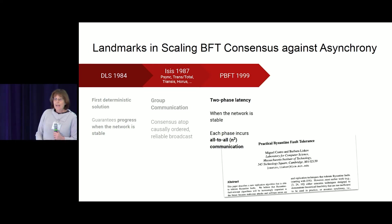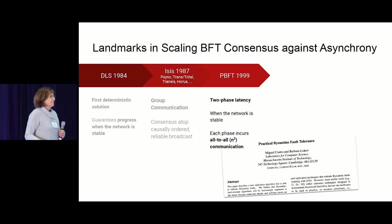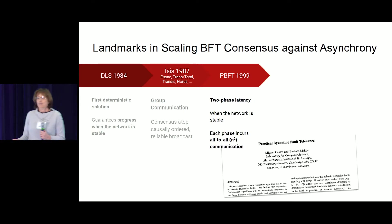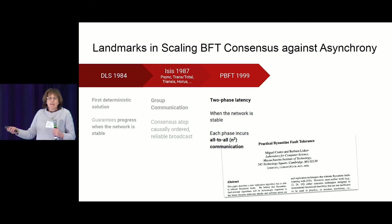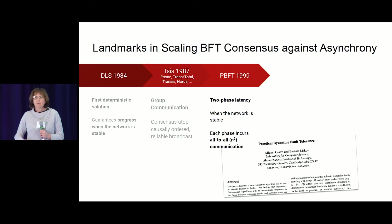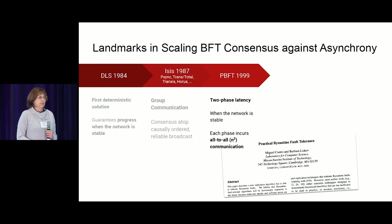For about two decades after that, starting with the first practical Byzantine consensus solution by Castro and Liskov, the community focused on pure consensus protocols in the partial synchrony model. Castro and Liskov introduced a very practical protocol, but it did have quadratic communication complexity. It didn't matter in 1999 when systems had maybe four to seven nodes. But as people started thinking about scaling, the quest has been: can we drive this quadratic communication complexity of BFT consensus down?